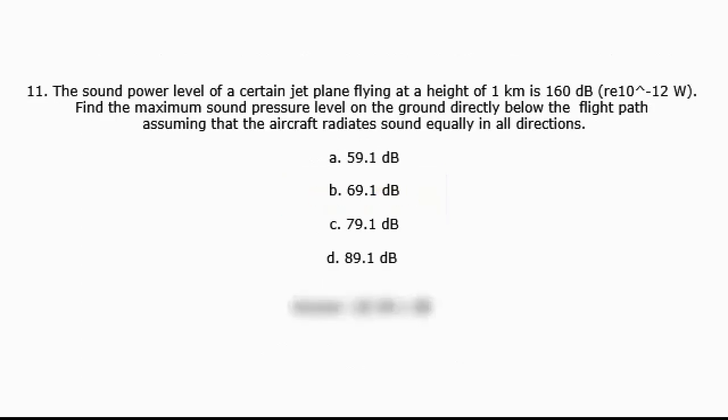Question 11: The sound power level of a certain jet plane flying at a height of 1 km is 160 dB re 10⁻¹² W. Find the maximum sound pressure level on the ground directly below the flight path, assuming that the aircraft radiates sound equally in all directions. A. 59.1 dB, B. 69.1 dB, C. 79.1 dB, D. 89.1 dB. Answer: D. 89.1 dB.